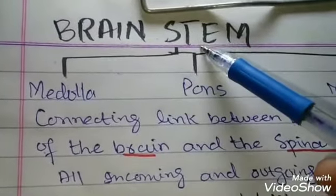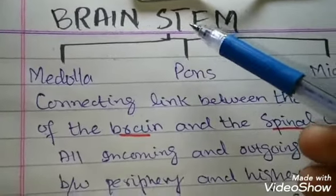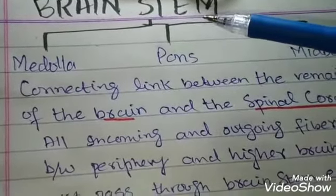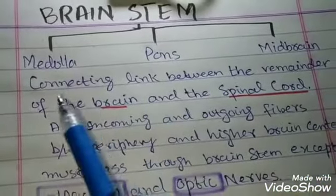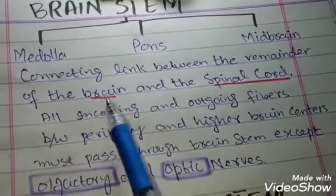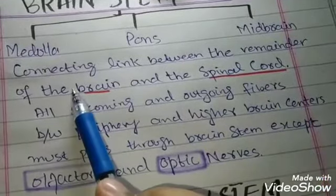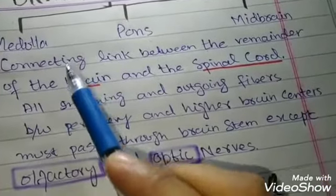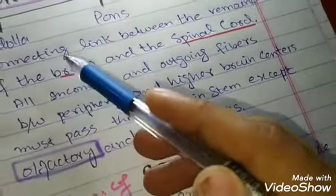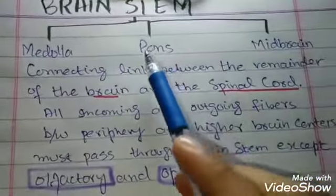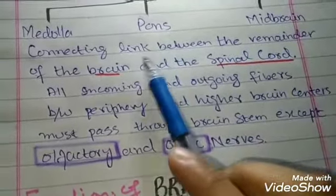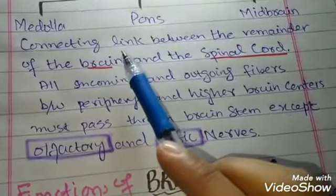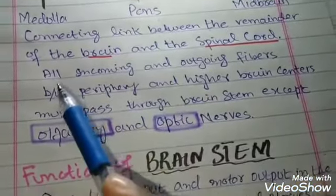Just as the stem of a plant is the connection between the roots and the aerial part, the brainstem is a connecting link between the remainder of the brain and the spinal cord. The remainder of the brain means the forebrain — cerebrum, thalamus, and hypothalamus — which are not included in the brainstem.